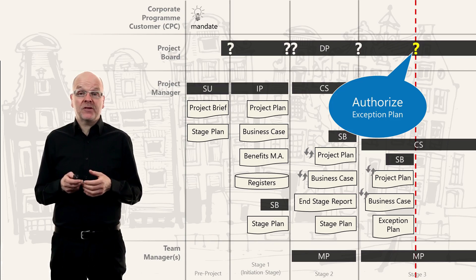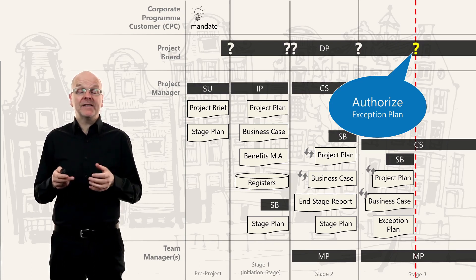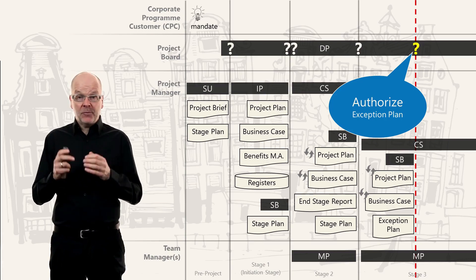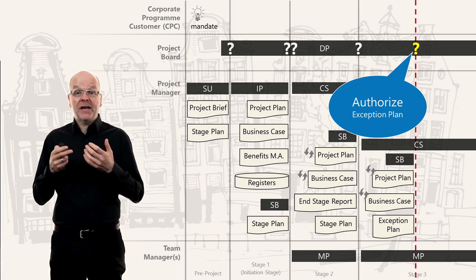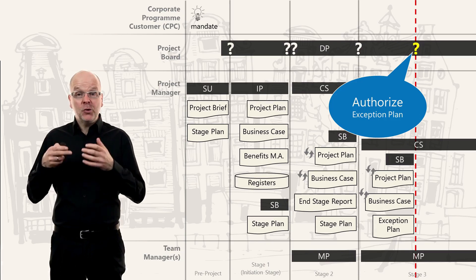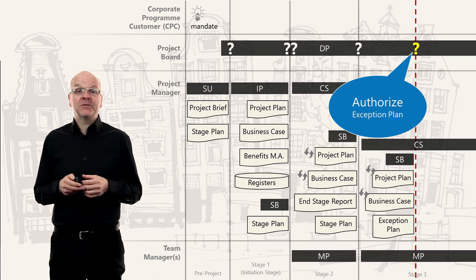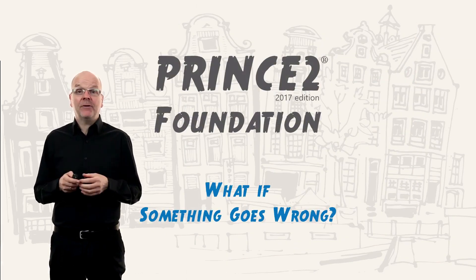So that is how the escalation process works in a PRINCE2 project: we set a tolerance, and if we go above tolerance we escalate to the level above using an exception report, then create a new plan called an exception plan to complete the current stage. That is how PRINCE2 handles something going badly wrong during a project.